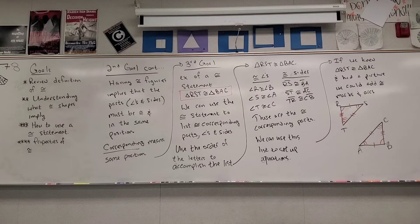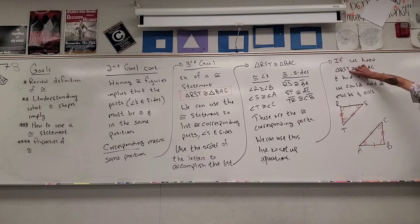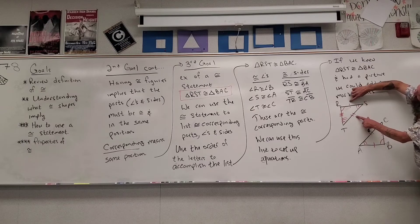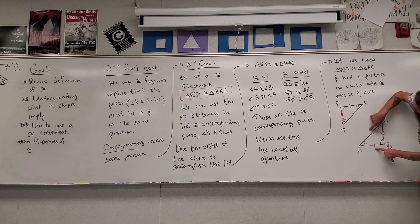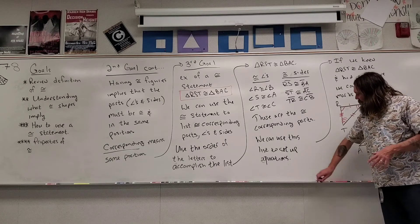Side TR is congruent to side CB, so they get three congruent tick marks. You can actually see 'corresponding' visually here — angle S is between the sides with one mark and two marks. Angle S matches up to angle A, and angle A is also between the sides with one mark and two marks. They're in the same position, next to the same things, like your thumbs. It's important to know who matches up with who.